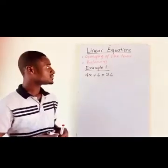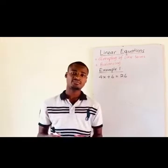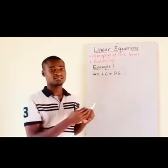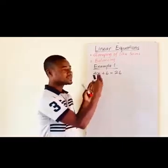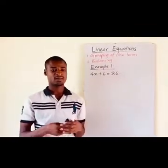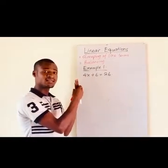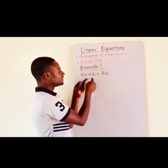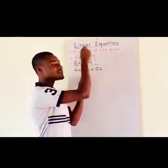We will first solve this linear equation using the method of grouping like terms. The idea is that all variable terms — all terms that contain the variable x — should be at the left hand side of the equation. And then all the number terms, the terms that do not contain the variable, should move to the right hand side of the equation.